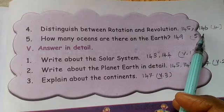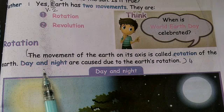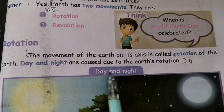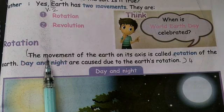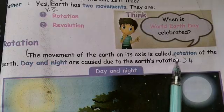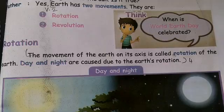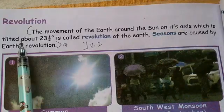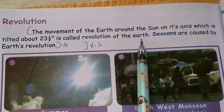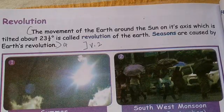Fourth question: distinguish between rotation and revolution. Page number 145-146. Draw a tabular column with two columns. Rotation: the movement of the Earth on its axis is called rotation of the Earth; day and night are caused due to the Earth's rotation. Revolution: the movement of the Earth around the Sun on its axis, which is tilted about 23 and a half degrees, is called revolution of the Earth; seasons are caused by the Earth's revolution.